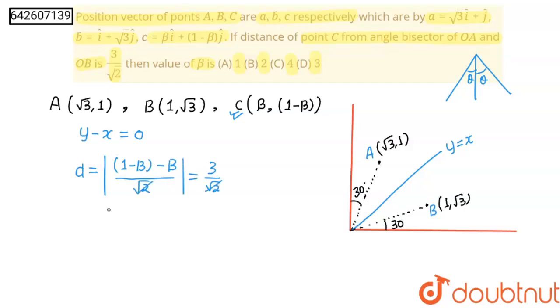So, both side root 2 will get cancelled out. I will get modulus |1 - 2β| = 3.